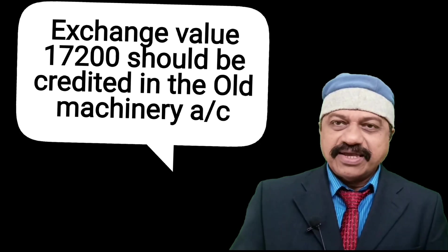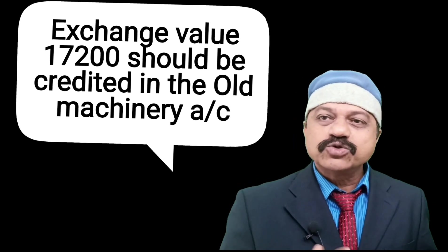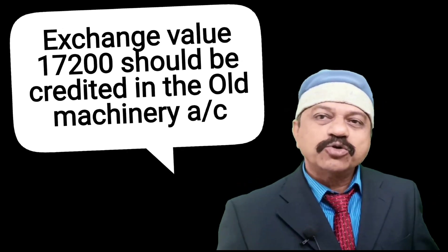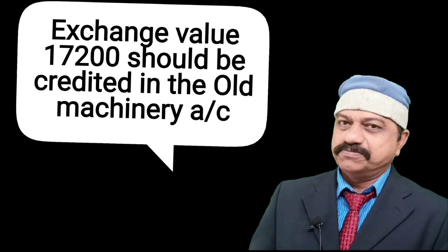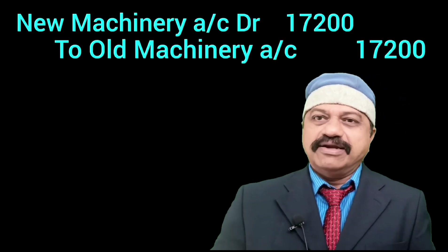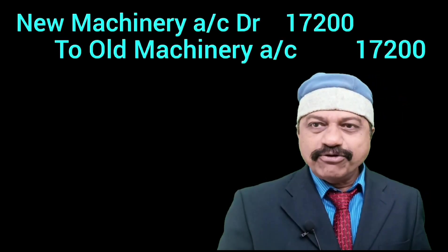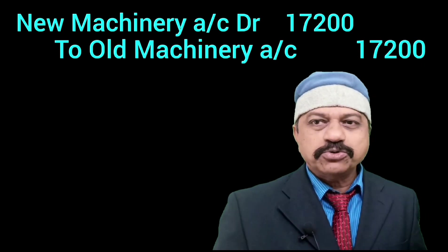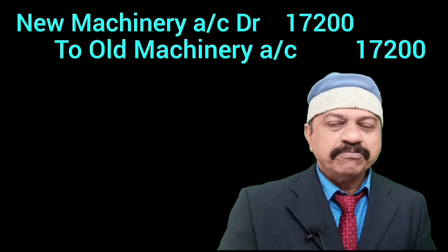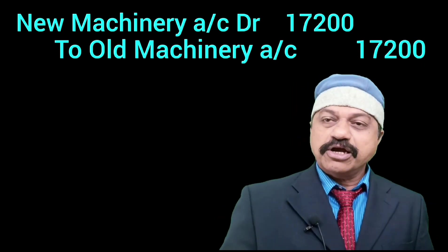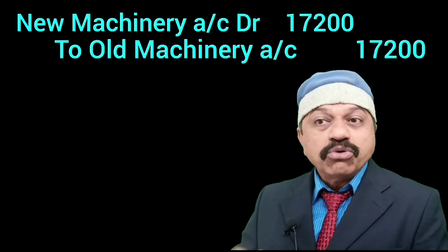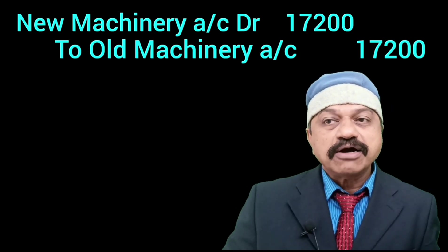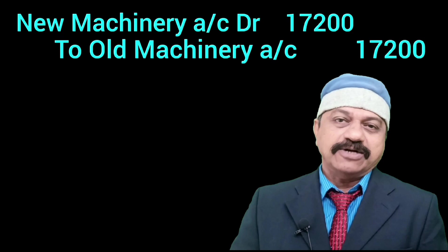Old machinery has been exchanged for 17,200. Therefore, exchange value of 17,200 should be credited in the old machinery account. The journal entry for 17,200 should be: New Machinery Account 17,200 to Old Machinery Account 17,200.